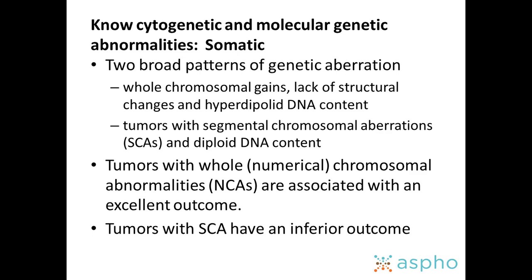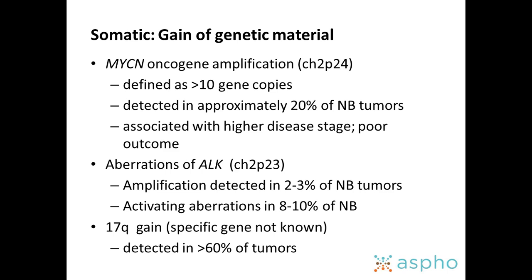Somatic mutations in neuroblastoma are broadly thought of as two patterns: whole chromosomal gains or losses, or segmental chromosome aberrations. This is important both for understanding types of somatic genetic aberrations and for prognosis — tumors with whole chromosome abnormalities are generally associated with a more favorable outcome than those with segmental chromosome aberrations. Within somatic aberrations, MYCN oncogene amplification is the most common genetic abnormality in neuroblastoma, occurring in about 20% of children overall, and 30% to 40% of those with high-risk disease.